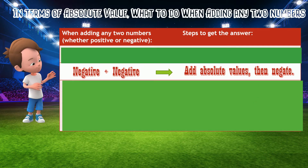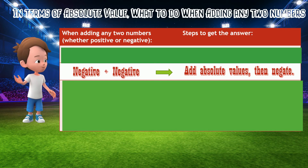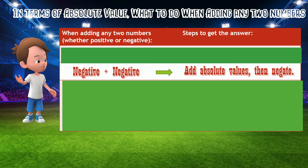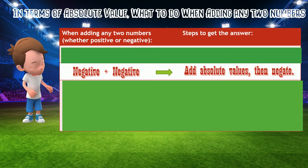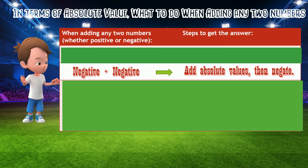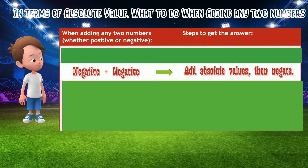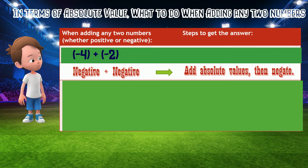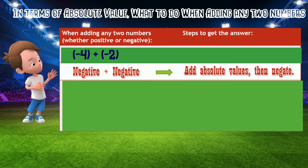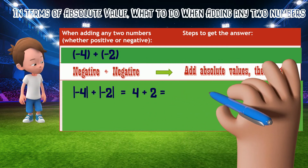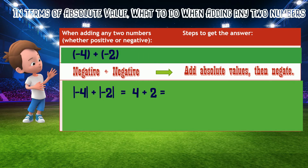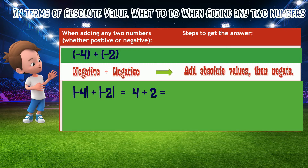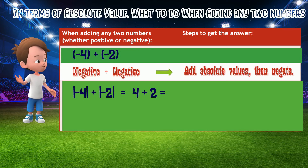The second case is adding two negative numbers — negative plus negative. The rule is to add the absolute values of each number, and then negate the answer. Going back to an example from lesson 1: negative 4 plus negative 2. The absolute value of negative 4 is 4, and the absolute value of negative 2 is 2. Adding those absolute values, 4 plus 2, is 6.